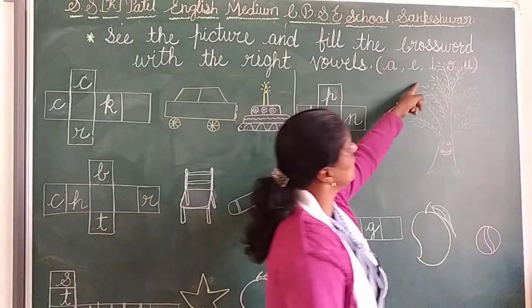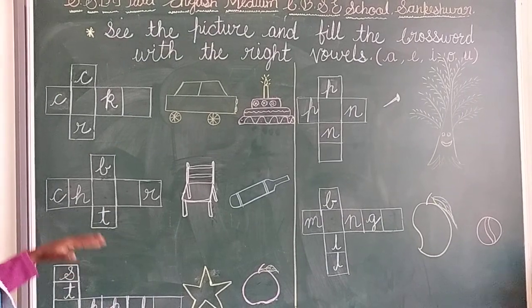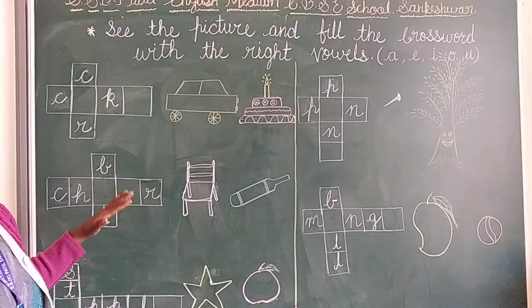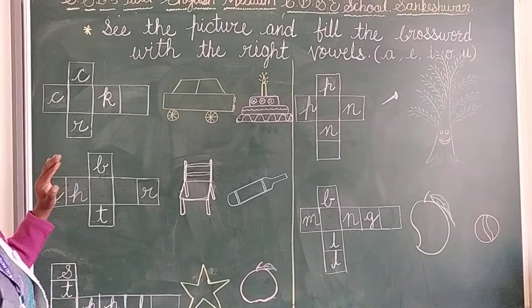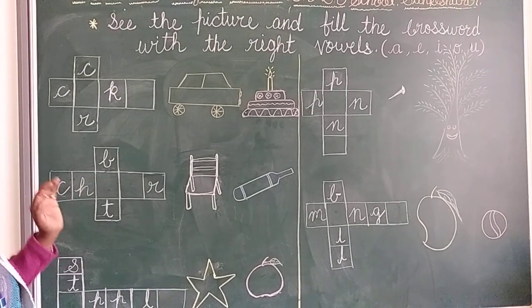See the picture and fill the crossword with the right vowels: A, E, I, O, U. See here, some pictures are there and related to that, words are there. We will fill the correct vowel letters and complete the word.